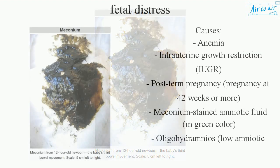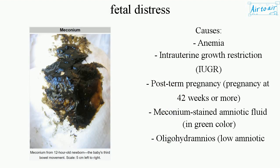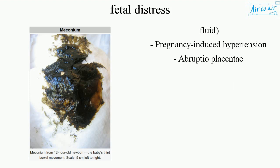Causes include anemia, intrauterine growth restriction (IUGR), post-term pregnancy (42 weeks or more), meconium-stained amniotic fluid (green color), oligohydramnios (low amniotic fluid), pregnancy-induced hypertension, and abruptio placenta.